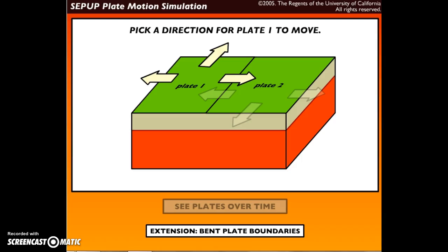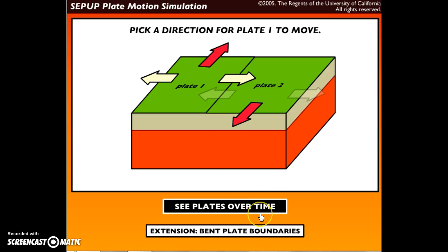All right, so now we're going to do the transform tectonic plate boundary simulation. We're going to choose the arrow pointing upward and then the arrow pointing upward, then select the arrow pointing downward. So we're going to see how the transform fault boundary moves over time.